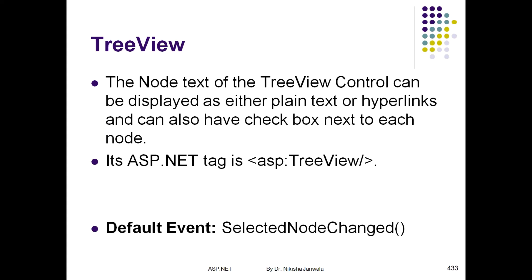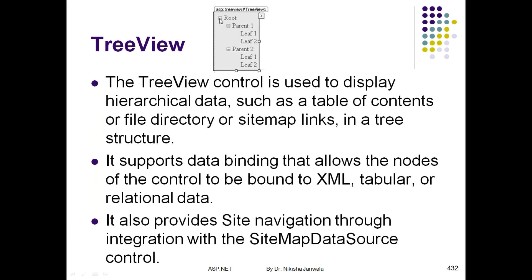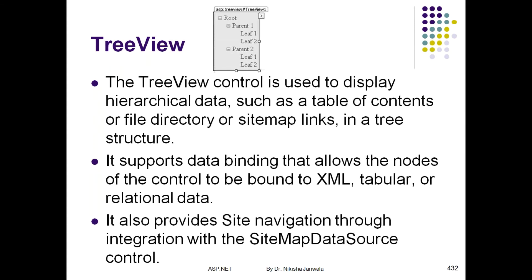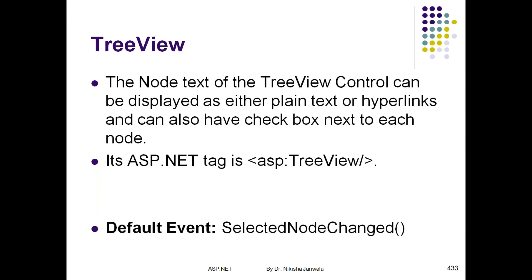In the TreeView control, we need to specify nodes — root, parent, and leaf. We need to call TreeView control nodes. We can render nodes in three different ways: we can render in simple text, we can render as a hyperlink, and we can also render as a checkbox.